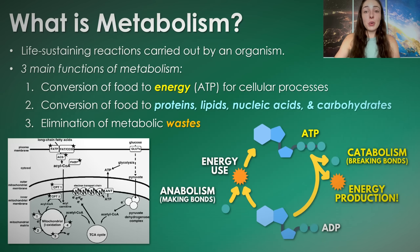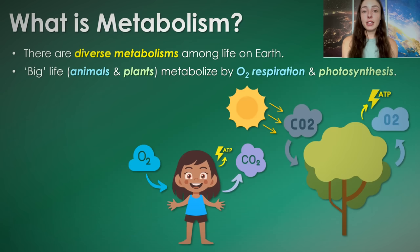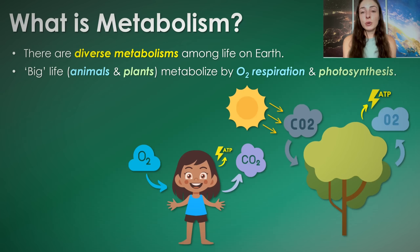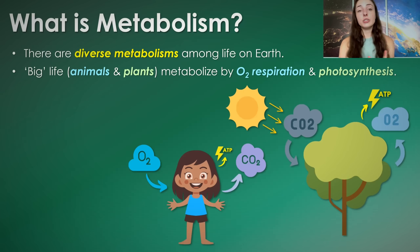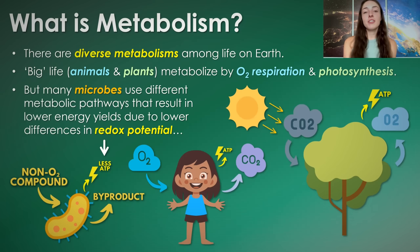There are diverse ways in which organisms produce ATP. Big life like animals and plants metabolize by either oxygen respiration — we take up molecular oxygen, use it to oxidize organic carbon like glucose, and release carbon dioxide — or photosynthesis, the roughly opposite process where plants take up carbon dioxide and water and use light energy to produce organic carbon and molecular oxygen. But many microbes use different metabolic pathways that result in lower energy yields, due to lower differences in redox potential of the molecules they use.